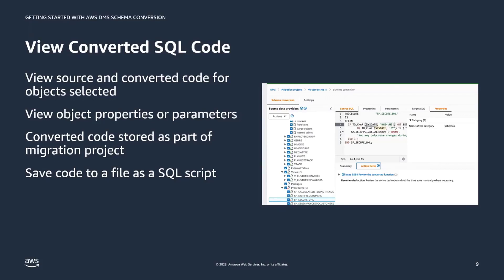When you're ready, applying changes is an action you initiate with a simple click in the console. If you don't want to apply converted code directly to the target database, you can save the code to a file as a SQL script, then review and edit those scripts where necessary, and manually apply them to your target database.